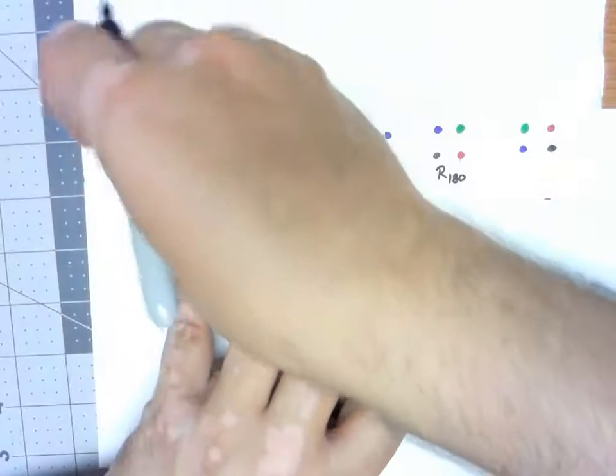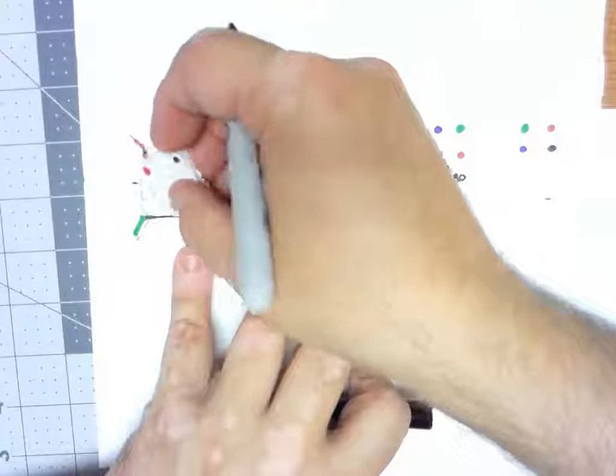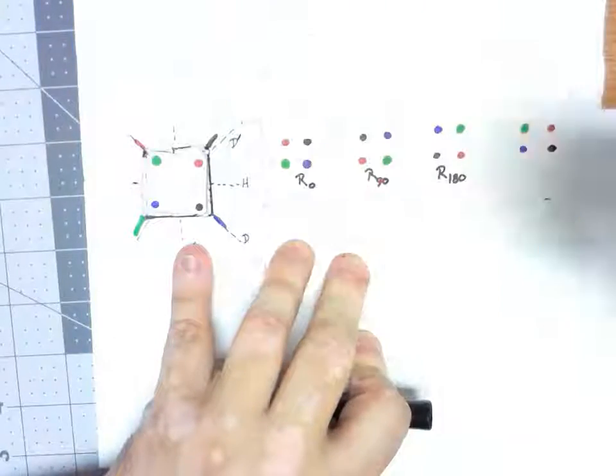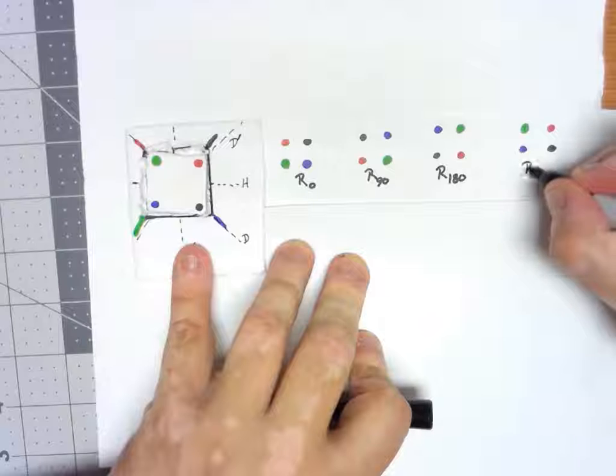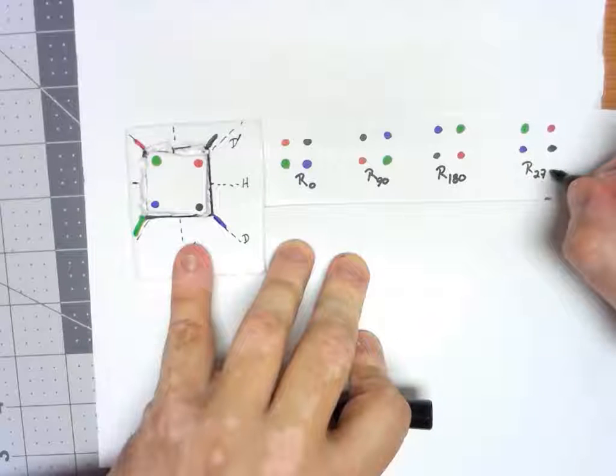And then finally, picking it up, going 1, 2, 3, putting it in, that's a rotation of 270 degrees.